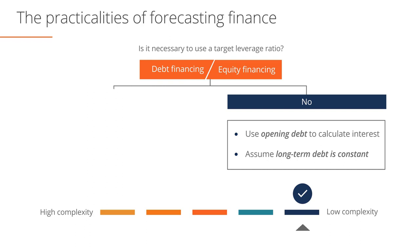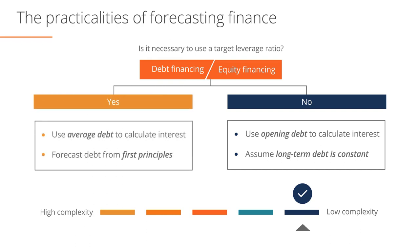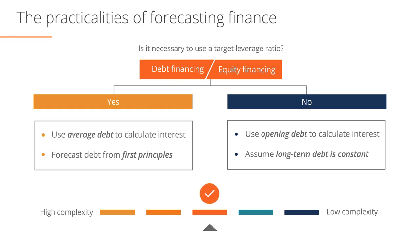However, if you need to use target leverage figures in your model, the next question to ask is: what level of precision is required in modeling the financing structure? Do you need to go down the high complexity route and model debt and equity issuance from first principles? If so, you will inevitably generate circular references that need to be solved. We will look at solutions for circular references later in this session. The halfway point is to build your model with an intermediate level of complexity where leverage ratios are used to calculate debt and opening debt is used to calculate interest.